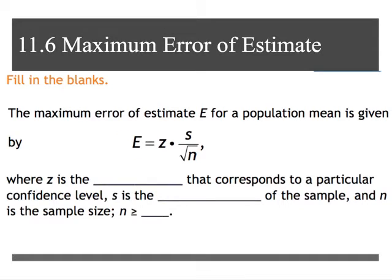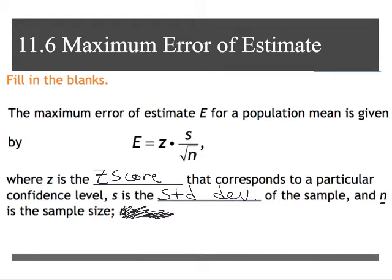We're going to find E, the maximum error, based off of our Z-score. We get our Z-score from three confidence levels that we normally choose in stats. S is our standard deviation, and N is our sample size. You take the standard deviation divided by the square root of N first, and then multiply that quotient by the Z-score, which will be given in the next slide.